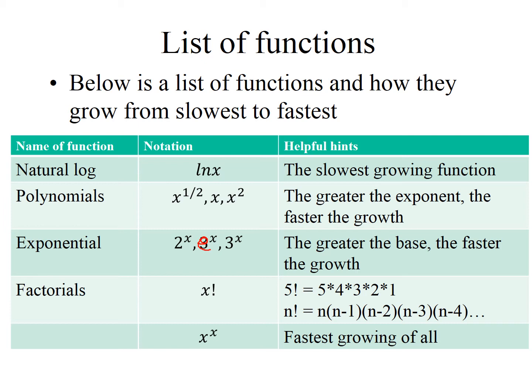Factorials you may not be familiar with, but it is like 5 factorial is 5 times 4 times 3 times 2 times 1. What we'll see most often in this class is n factorial. Notice that each time we subtract 1 from the factor. And then the fastest of all growing is x to the x.